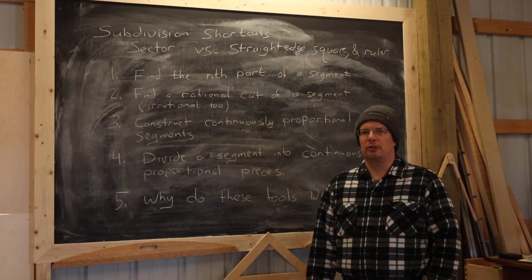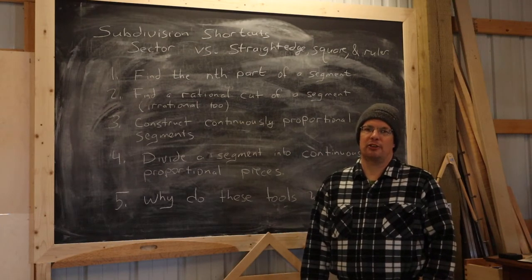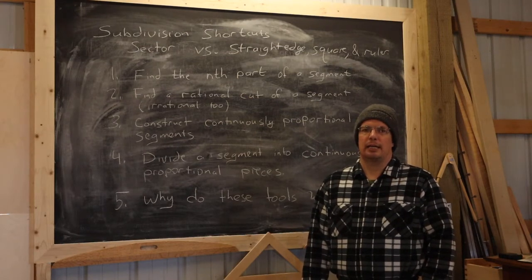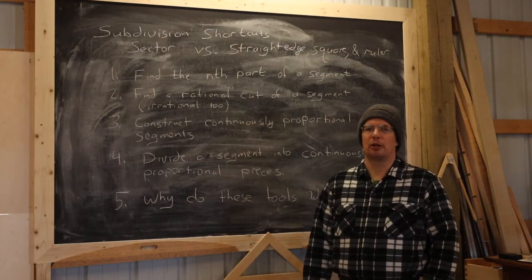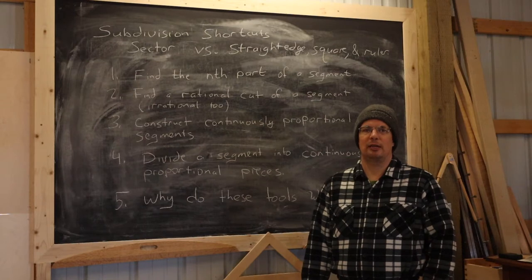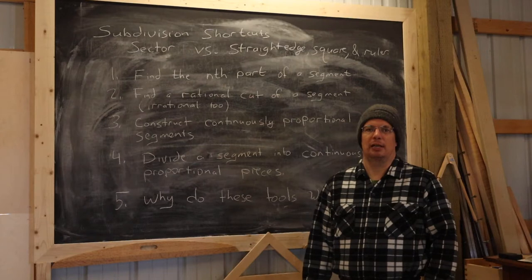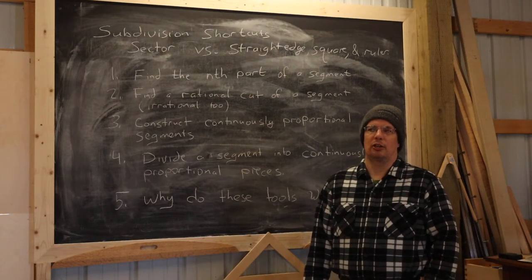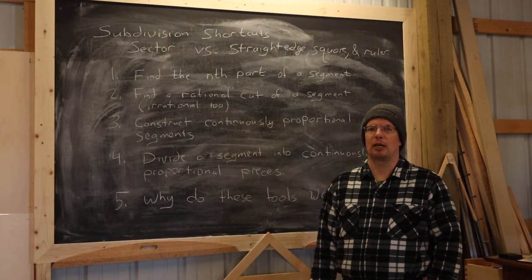The tools that we're going to use that will simplify and speed up that process are the sector that I've already introduced, and also a combination of a straight edge, a layout square, and a marked ruler. That technique is almost as fast as the sector in many examples, and it's a nice technique to know about in case you can't get your hands on a sector, or the sector is either too big or too small for the particular layout job.